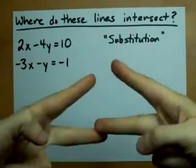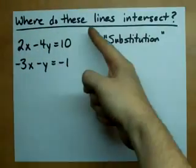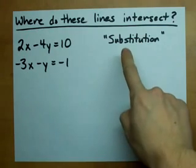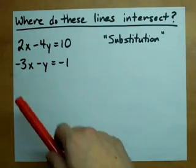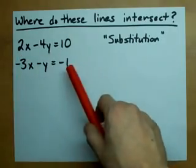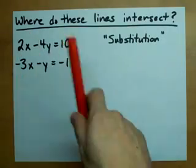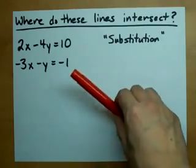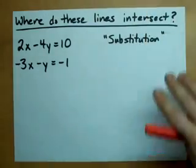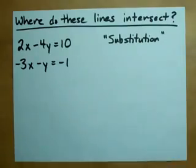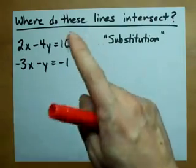All right, let me show you how to find where two lines intersect by a method called substitution. Here's the deal. These are two equations for lines. They have different slopes and so they're going to intersect once somewhere in the entire XY plane. We want the coordinates of that point.